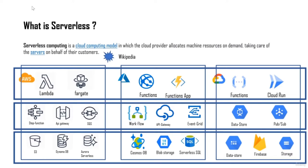Serverless computing is a cloud computing model in which the cloud providers allocate machine resources on demand and take care of servers on behalf of the customers. When we think about serverless, we generally think about services like Lambda in AWS, Function App in Azure, or Cloud Functions in GCP. But that's not entirely true — you can also include tools like SQS and SNS if you're working in AWS, or other application integration tools in other cloud providers.